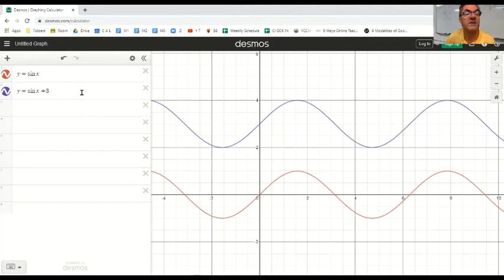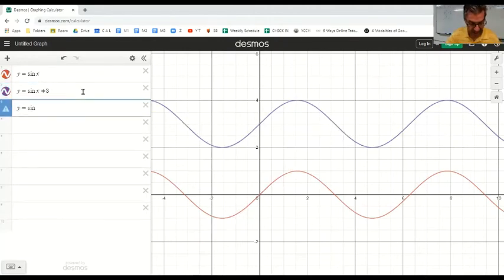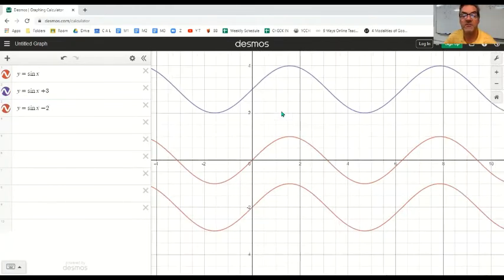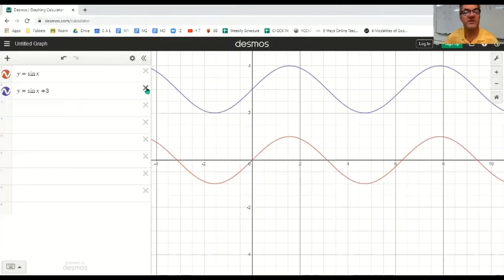Let's do it the other way. Y equals sine X minus two and check it out. Now we've dropped it down this second red one. I'm not sure why Desmos does this. They've got a lot of colors they could use. But our second red one is our horizontal translation two units down the Y axis. So that pretty much covers the translations I put on the board.